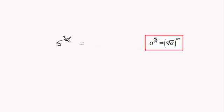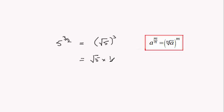Following that rule, the 2 means we take the square root of 5, all to the power 3. This is exactly the same as root 5 times another root 5 times another root 5. We note that root 5 times root 5 is the square root of 25, which is 5.